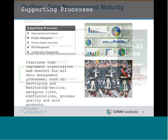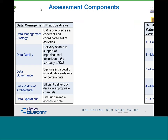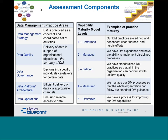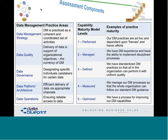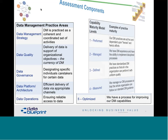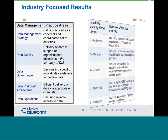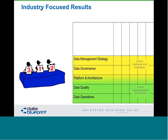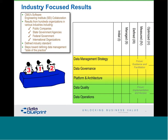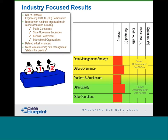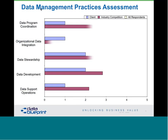The framework rates five data management practice areas plus supporting processes on a one-to-five scale. An insurance industry assessment showed that the general level of performance is uniformly low, and all companies could benefit from better data management. For an individual airline, executives were staring as Peter presented ones and twos — until he added red lines showing the competition's scores. That got executives' attention very quickly, and they became quite attentive.